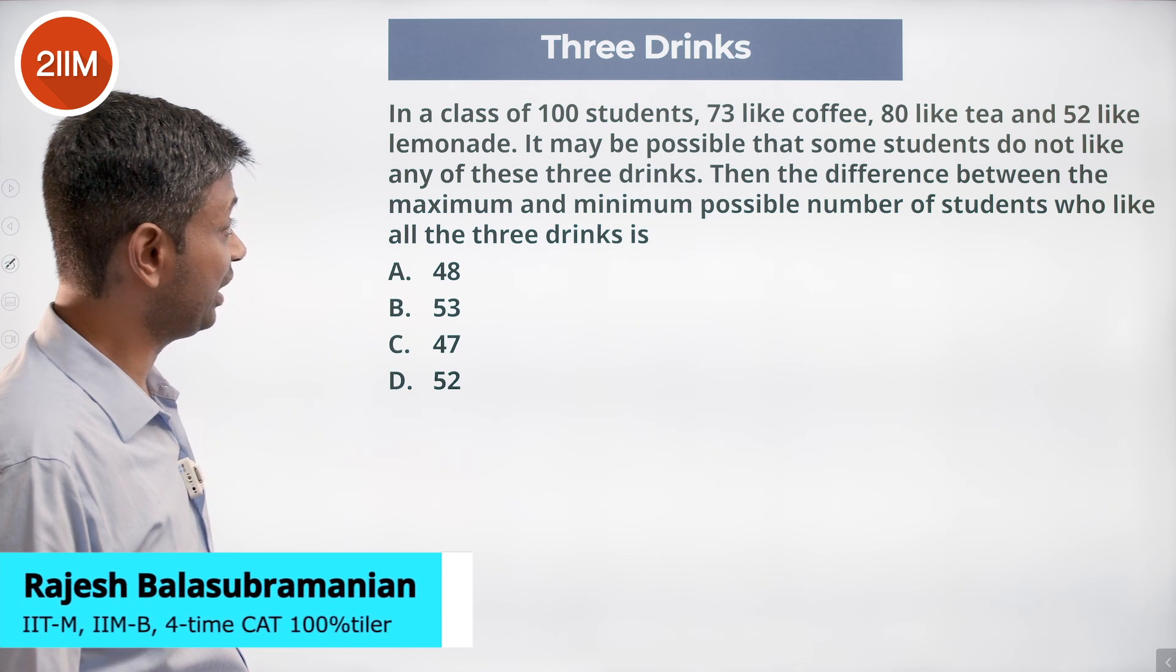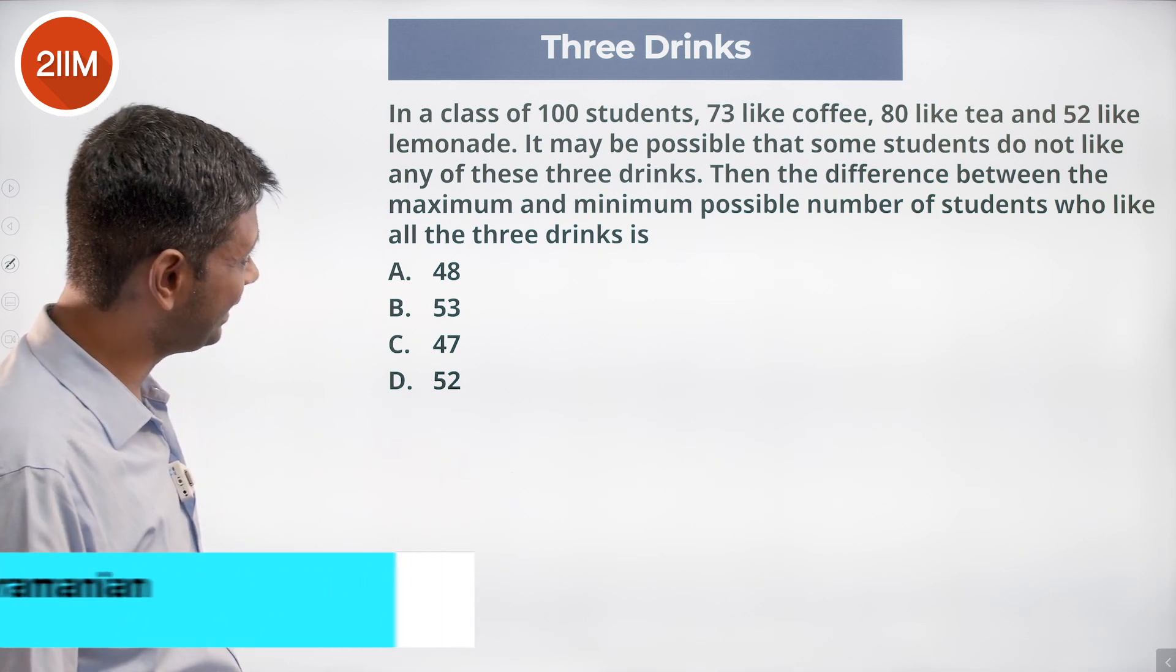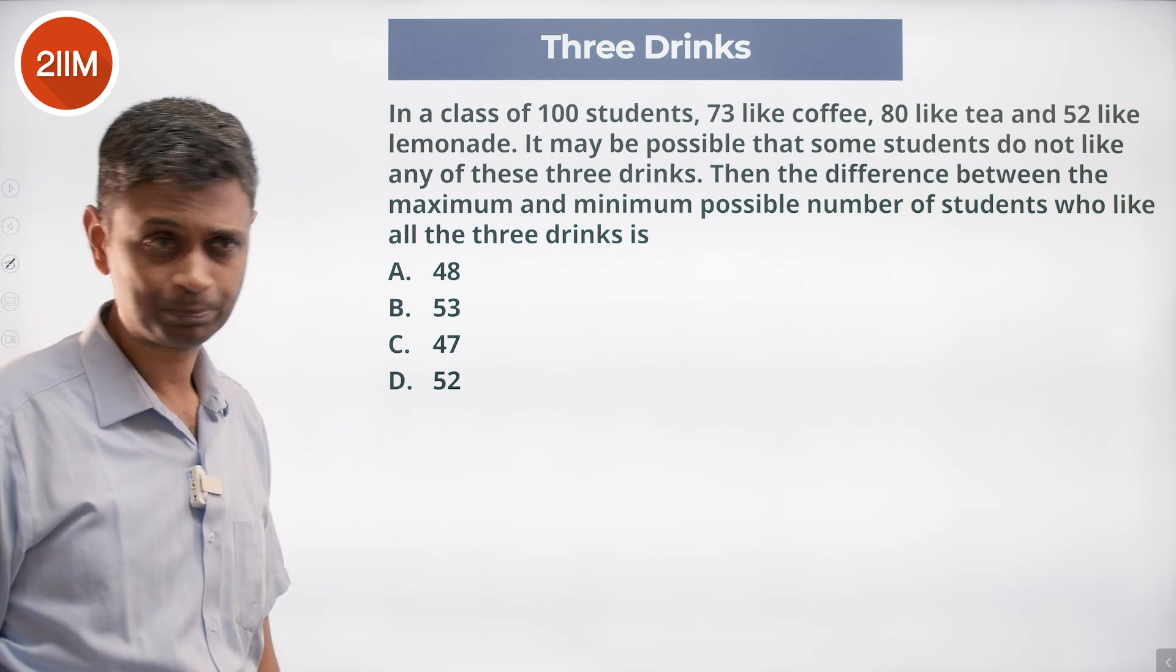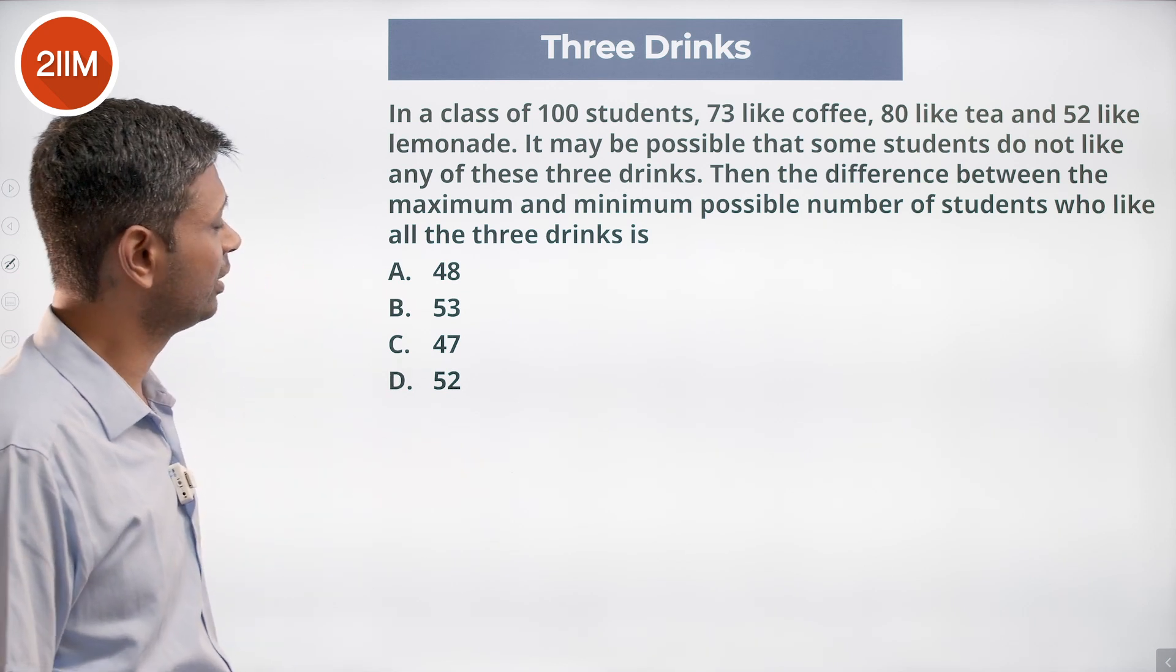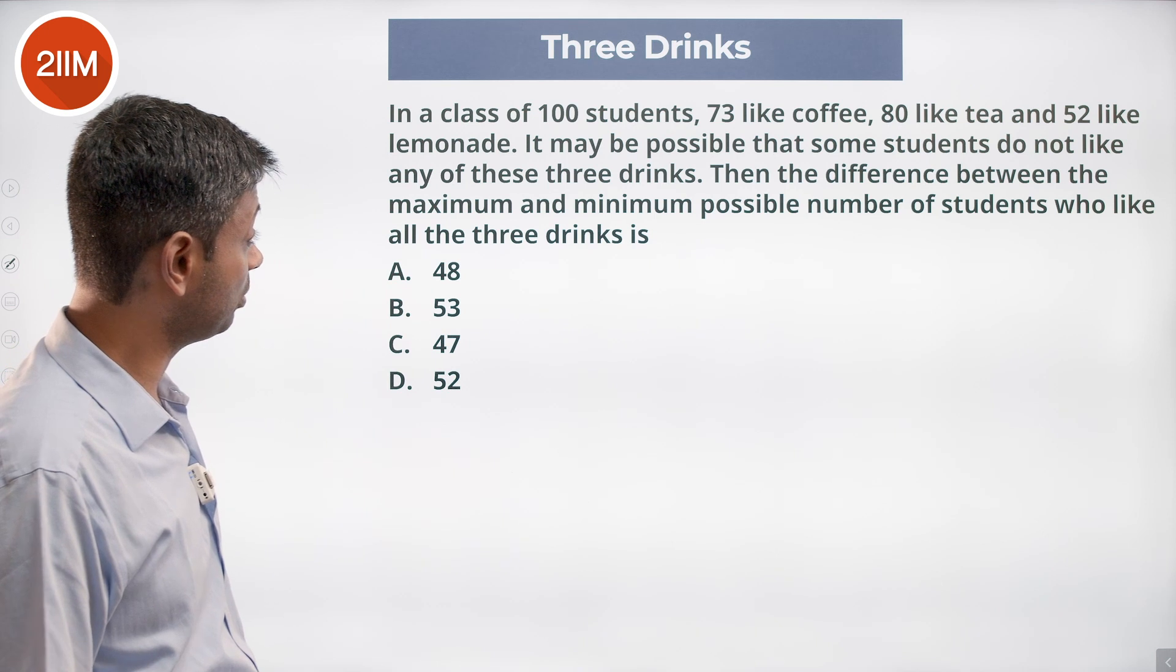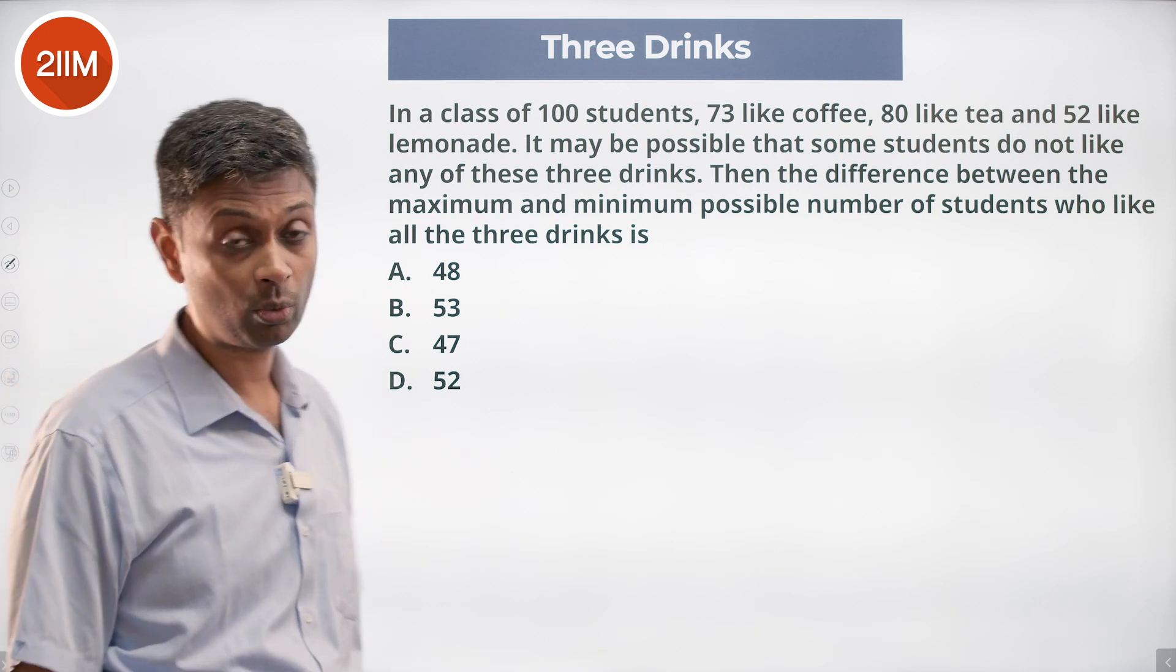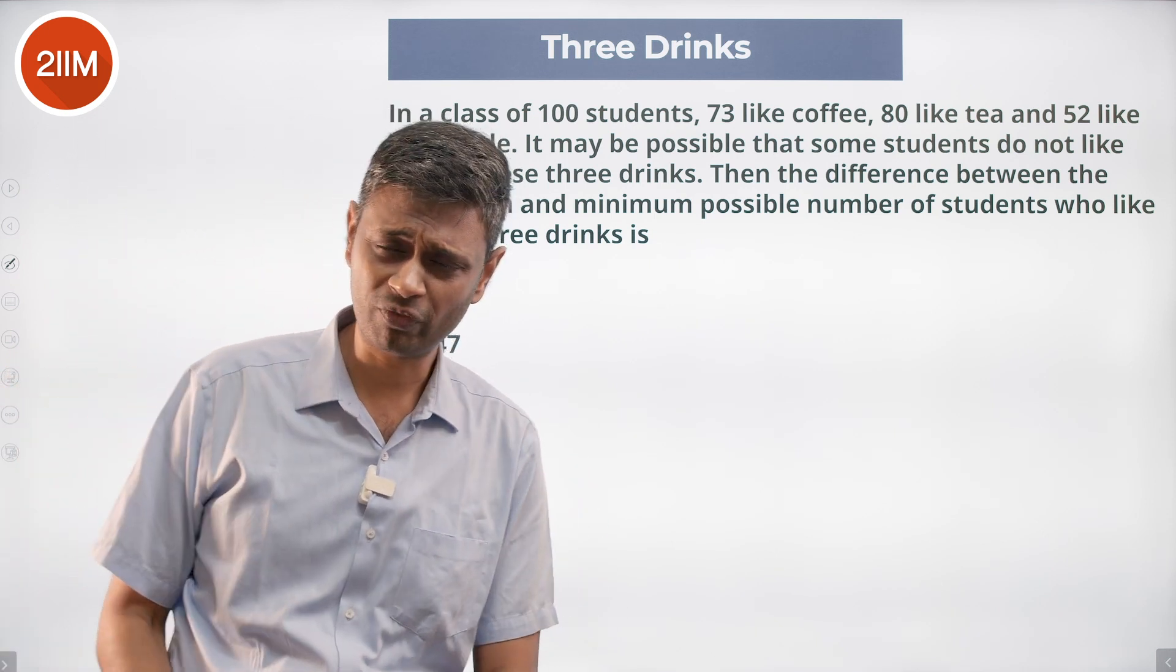In a class of 100 students, 73 like coffee, 80 like tea and 52 like lemonade. It may be possible that some students do not like any of these three types. The difference between the maximum and minimum possible number of students who like all the three drinks is a pain in the neck question, right? Very tough, very time-consuming.